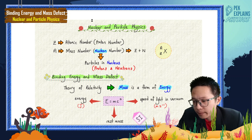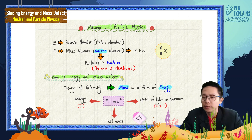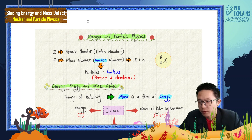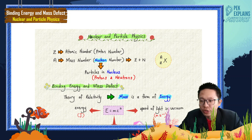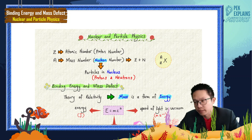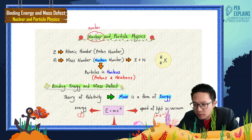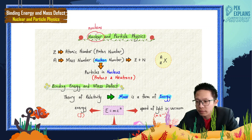Let us learn nuclear and particle physics. Before we start this chapter, I want to clarify: this chapter is about the nucleus, not the atom. If you look at the title itself — nuclear — it only focuses on the nucleus of the particle, not the atom.